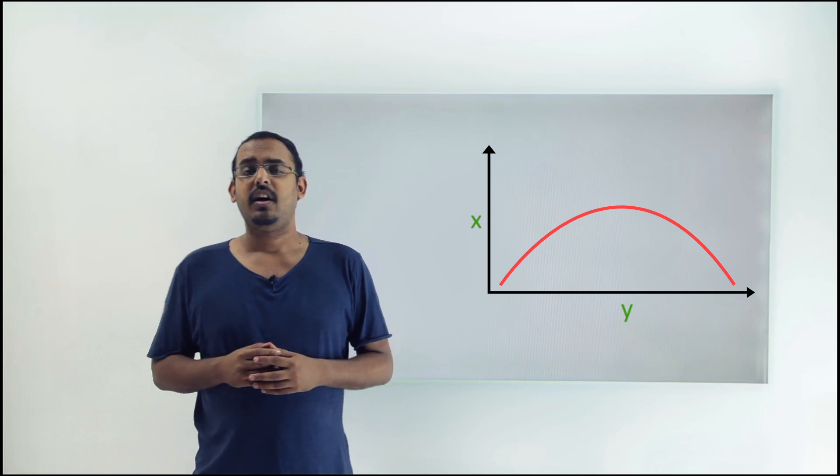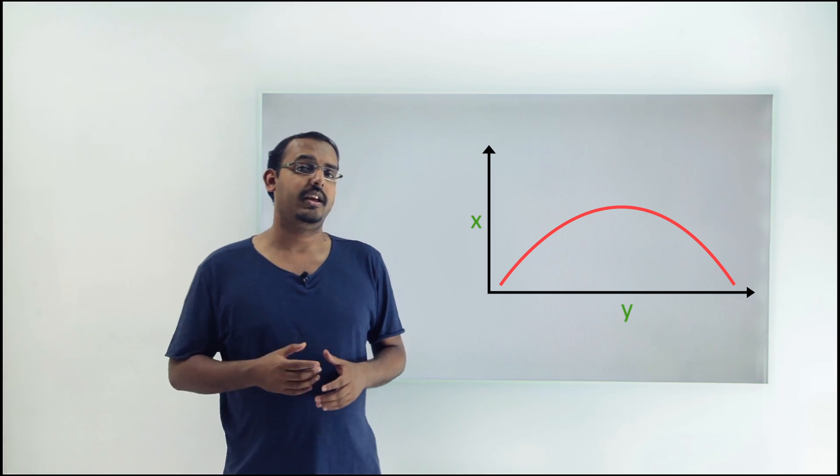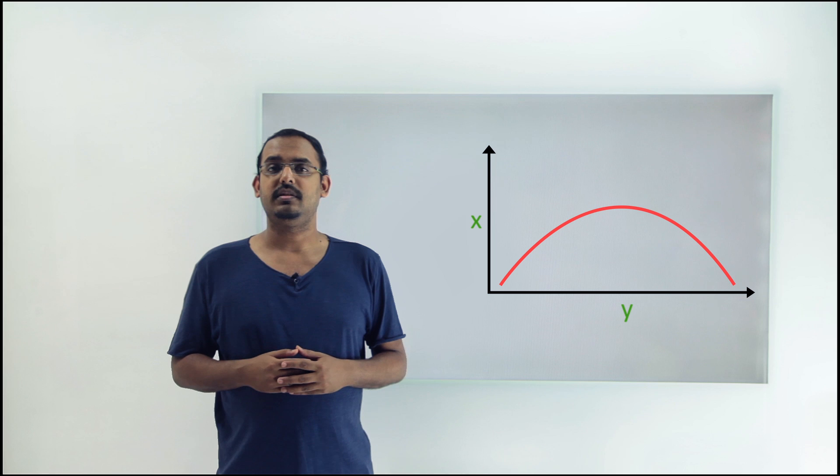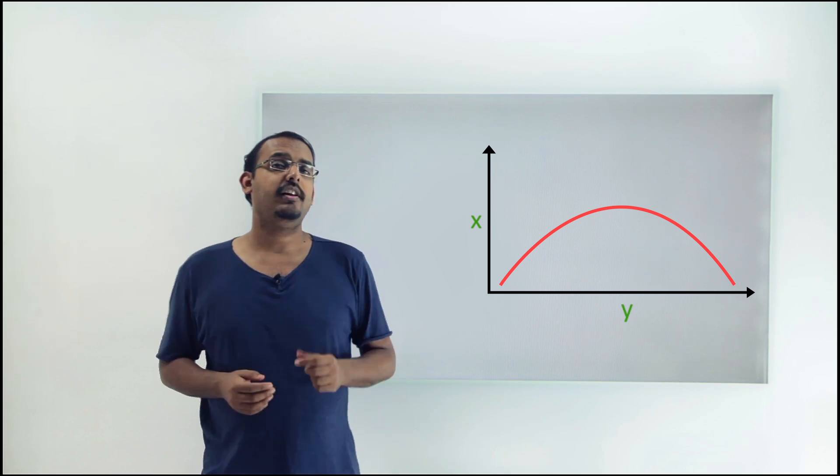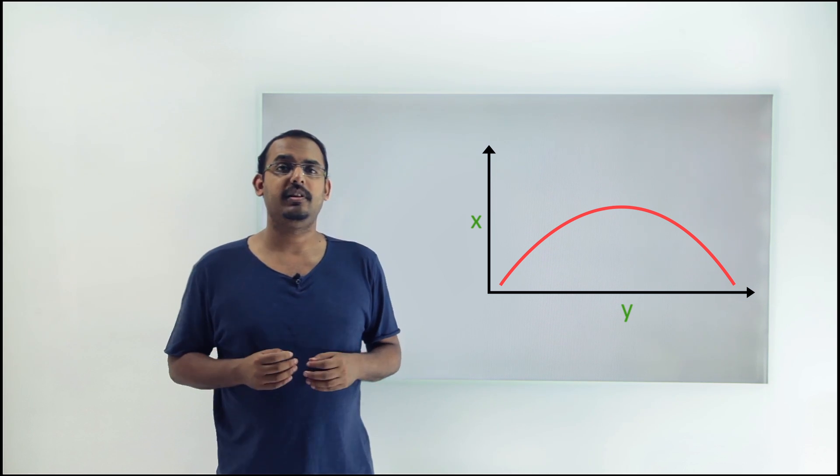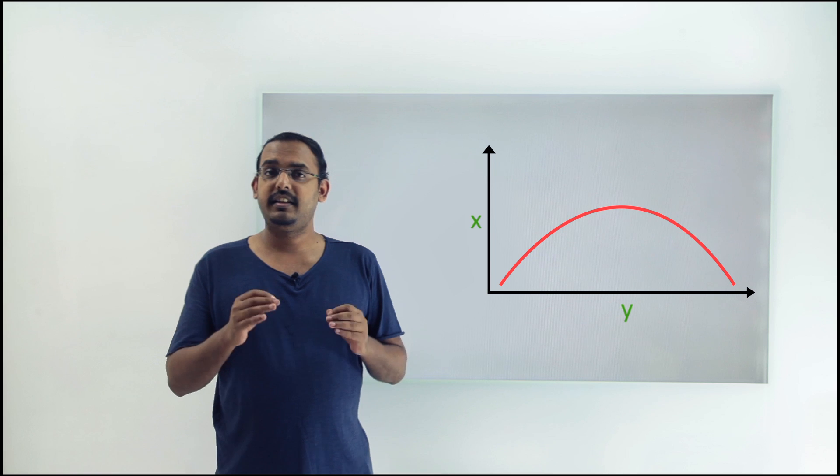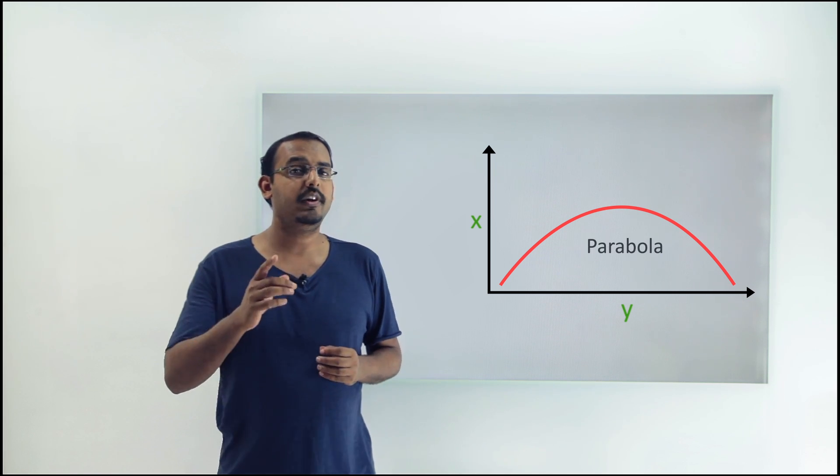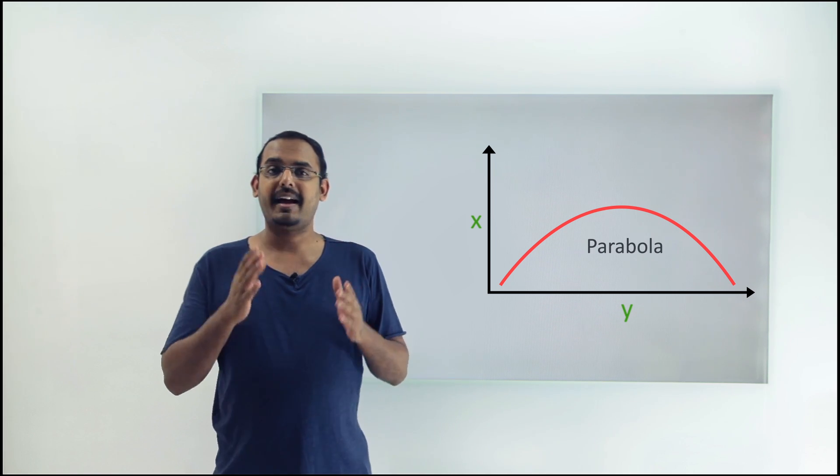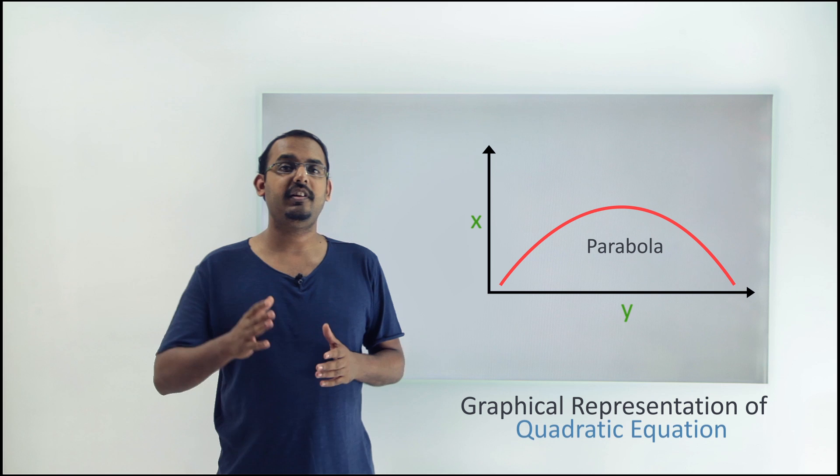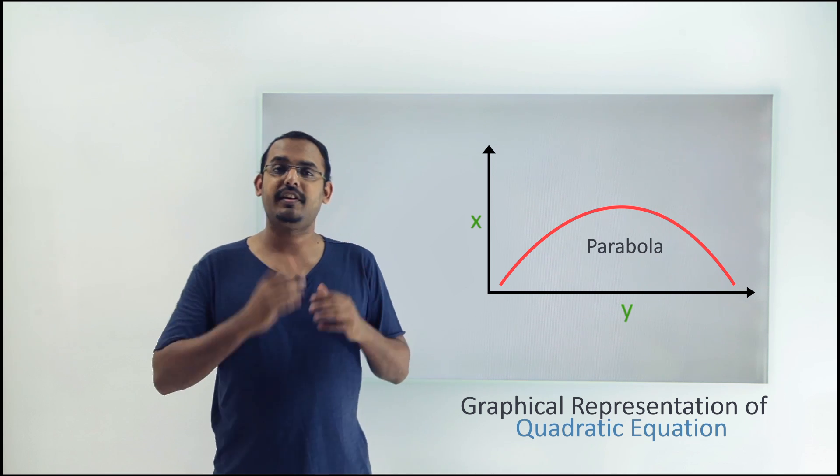But you might be thinking, why are we talking about this particular shape while studying quadratic equations? If you recall correctly, in the chapter of polynomials, we have seen that this particular shape is what we call a parabola. And a parabola is used to represent a quadratic equation in graphical form.